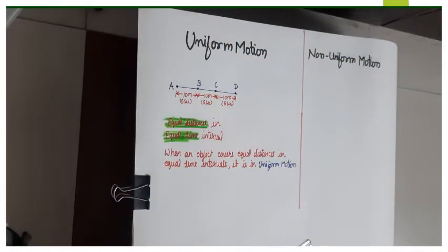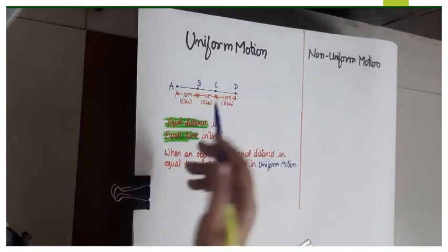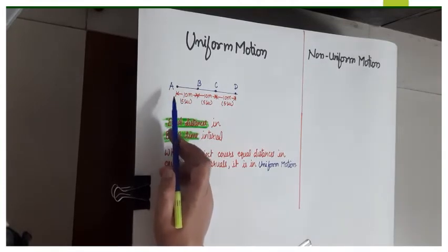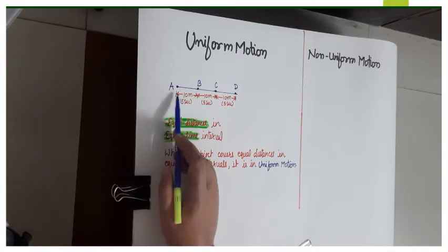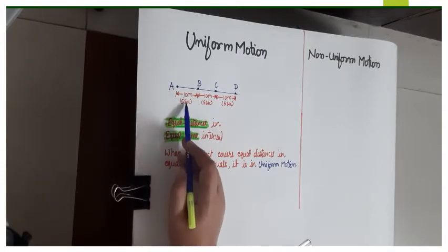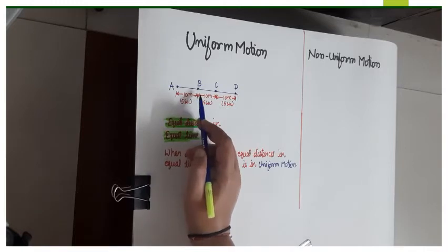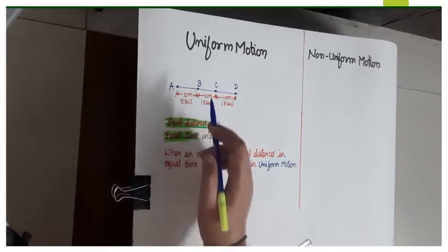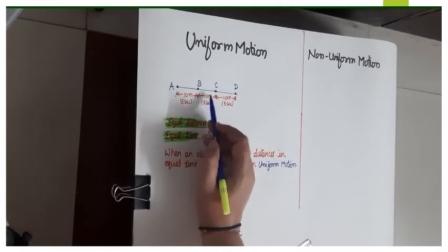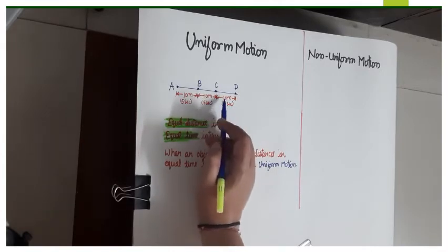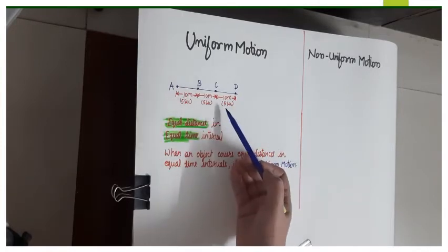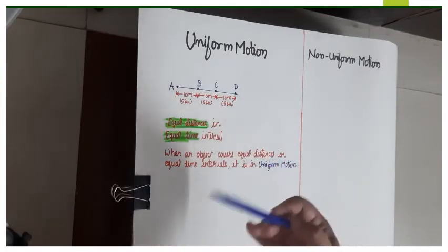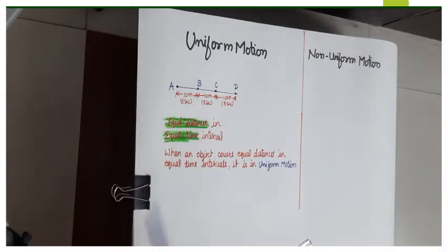First we will study about the concept of uniform motion. Suppose we have an object which starts moving from a reference point or starting point A. In 5 seconds it covers a distance of 10 meters and reaches point B. Then in the next 5 seconds it covers another 10 meters and reaches point C, and again in the next 5 seconds it covers another 10 meters to reach point D.